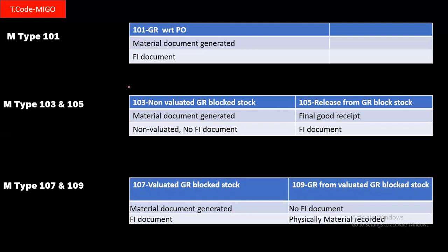The basic difference between 103/105 and 107/109: at the time of 103, the material is non-valuated and sits in GR blocked stock, whereas in 107 it is valuated GR blocked stock. In both cases the material is in blocked stock, but in 103 it is non-valuated so no accounting document is generated. At 107, the material is valuated even though it has not been physically received, so an accounting document will be generated. After release at 105, the accounting document is generated.